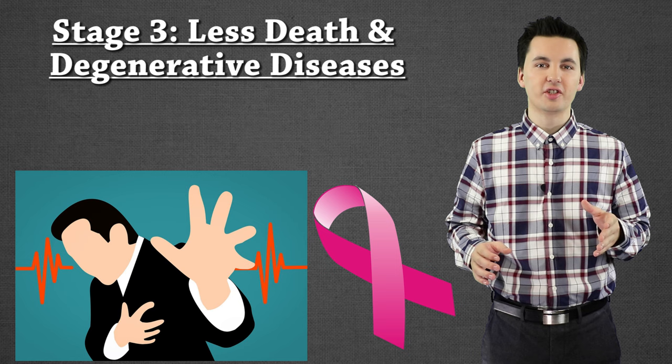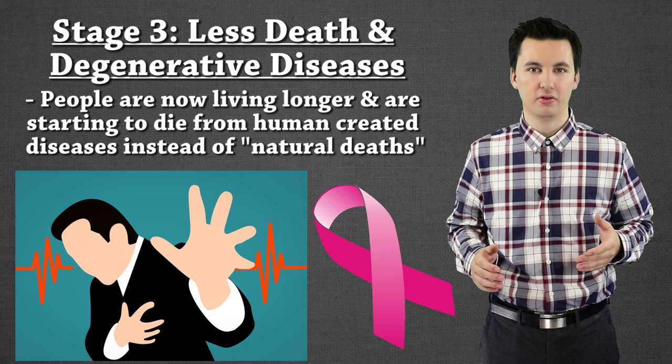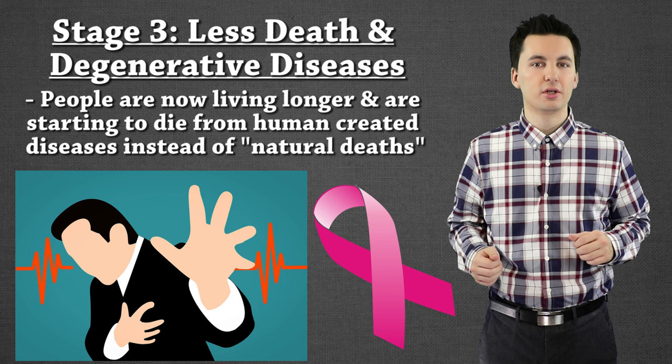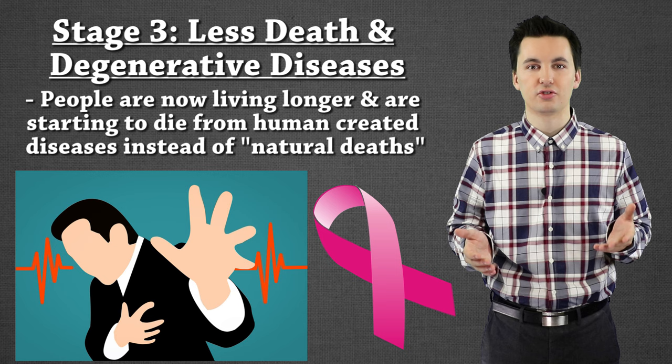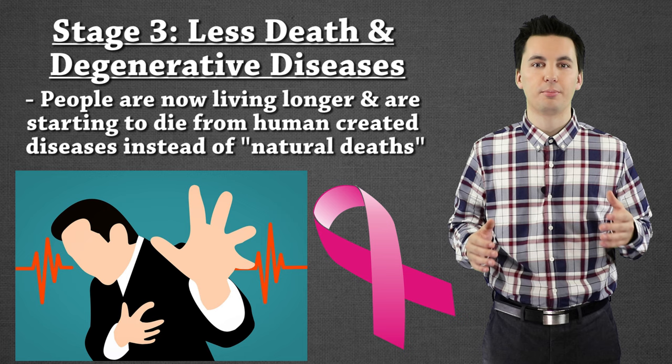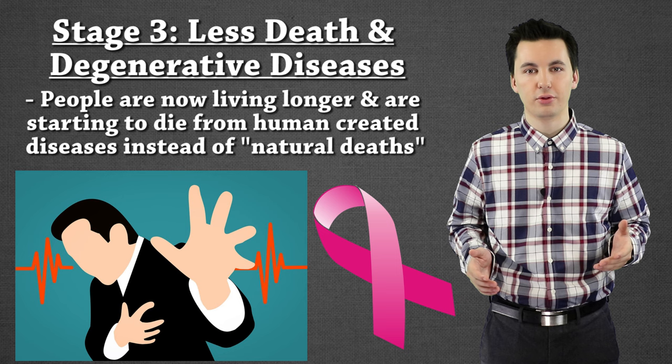Stage three of the Epidemiologic Transition Model is characterized by less death from natural diseases and more death from degenerative diseases. We are now living so long that our bodies are starting to decay. Some of these are also human-caused diseases. This is where we'll start to have heart attacks, diabetes, and cancer impacting the population. We're living so long that sometimes our bodies start to decay, or we're eating so much food — having such a big food surplus — that people start to gain weight, become more sedentary, and that leads to heart attacks and poorer health conditions.